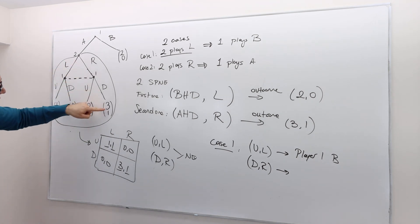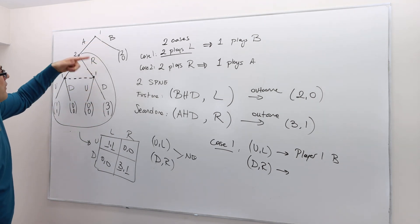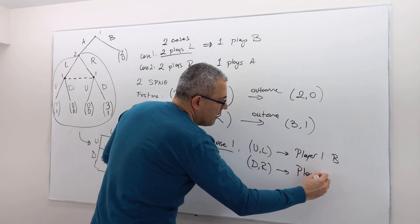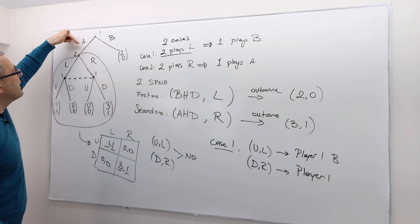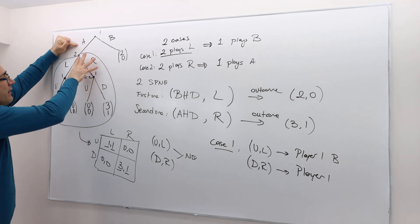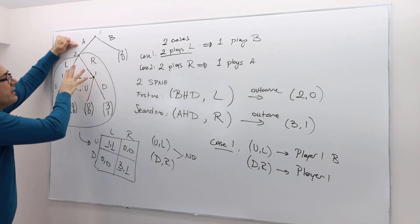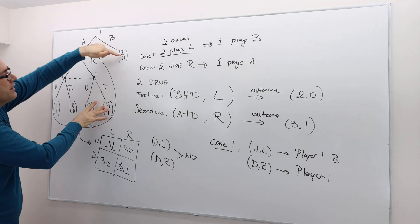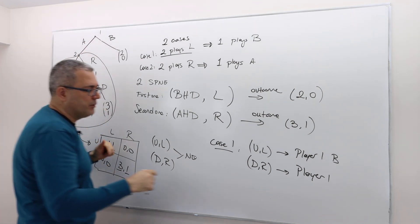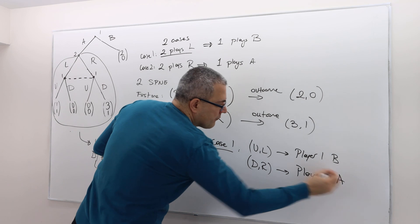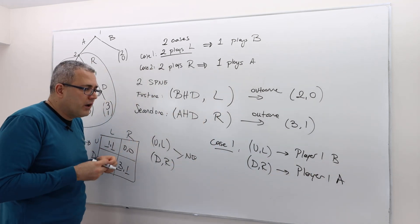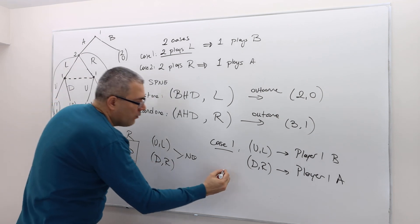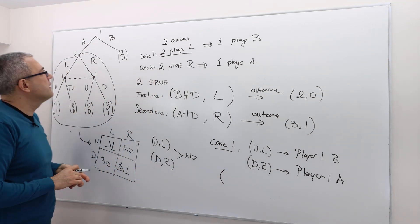If the second Nash equilibrium d-r is played, with payoff 3,1, then player one's optimal action: if he plays a, he assumes they'll play the d-r Nash equilibrium here, getting 3. If he chooses b, he gets 2. So the decision is simple — go for a.